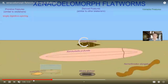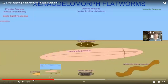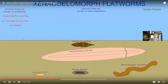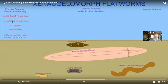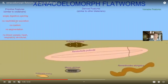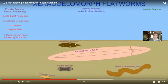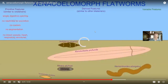Acoels are flatworms unrelated to the next group I'll discuss. They do have some primitive features which make them similar to cnidarians. They have a single digestive opening, so one opening serves as both mouth and anus. They do not have nephridia for excretion of urinary waste. They have no segmentation, no coelom, no blood vessels, no heart, no respiratory structures. In that sense they are primitive, but they are a little more advanced than cnidarians because they are bilaterally symmetrical.